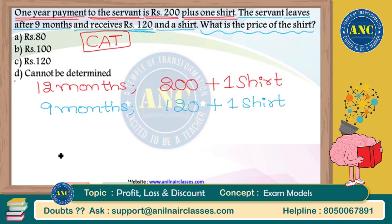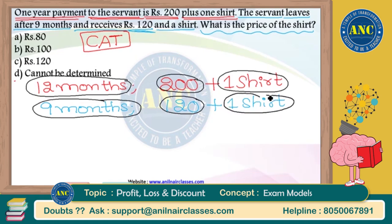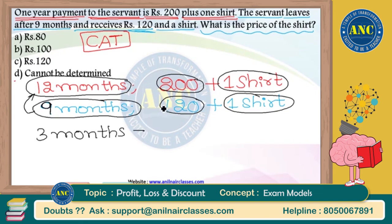If I work for 12 months, I would have got 200 rupees and also one shirt. But I worked only for 9 months, so I got 120 rupees and a shirt. For 9 months, I got 120 rupees and a shirt. If I had worked for 3 more months extra — that means if I had worked for 12 months — what would I have got for those extra 3 months?